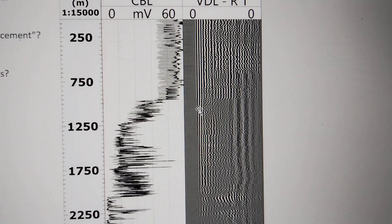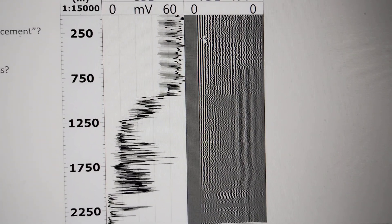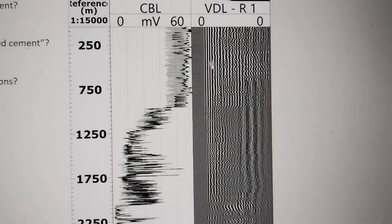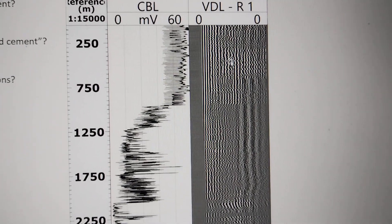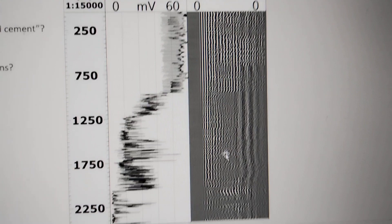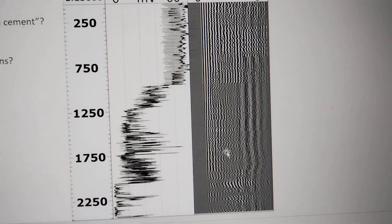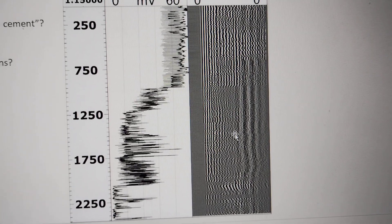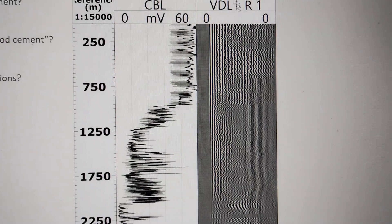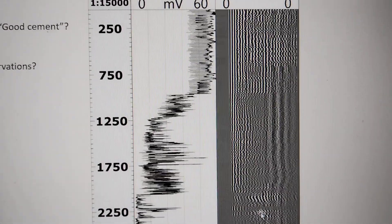You can see the white area here. This is poor cement, but when we have a lot of black color, the VDL shows good cement. Thank you very much.